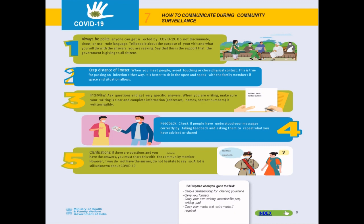How to communicate during community surveillance: always be polite, as anyone can be affected by COVID-19. Do not discriminate, shout, or use rude language. Tell people the purpose of your visit and what you will do. Keep a distance of at least 1 meter when meeting people and avoid close physical contact. You can sit in the open and speak with family members. Ask questions, get specific answers, and ensure your writing is clear with complete information — address, name, and contact number. Develop a rapport and trust among contacts, as there are chances a person may give wrong information.